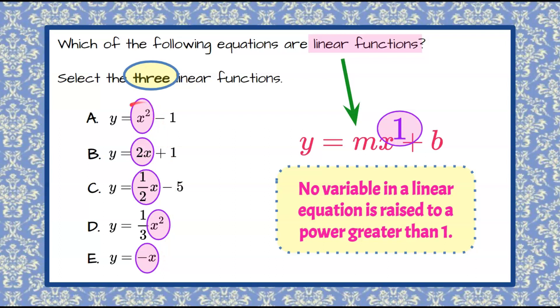We notice in A that it's x squared, and 2 is greater than 1, so therefore A is not a linear function. This is actually a quadratic function. B is written in slope intercept form with that invisible 1 exponent, so B is one of our three choices.